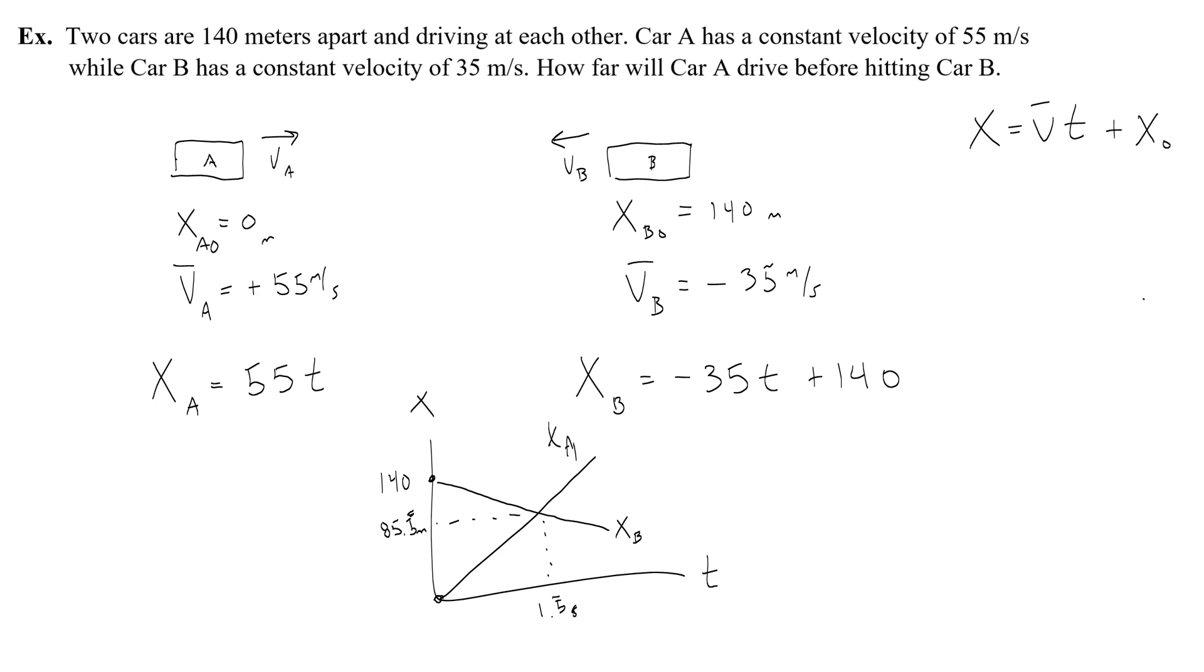And again, if you don't want to use your graphing calculator, they will be in the same position when 55t equals negative 35t plus 140. So you can use this equation. It's very easy because it's no t squared. It's not cubed or anything like that. So this will give you an answer of t equals 1.5 seconds. And you would plug that back into either equation one. And you would get a correct answer. Okay. Great. So happy that you did this. Video is done.